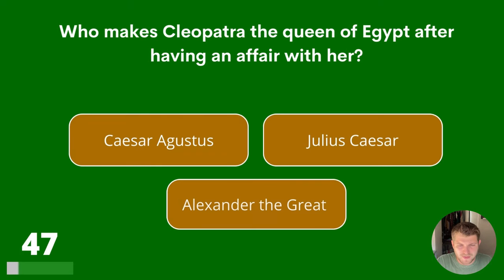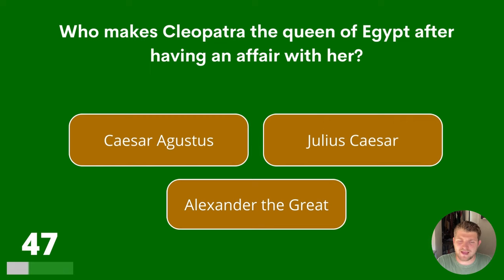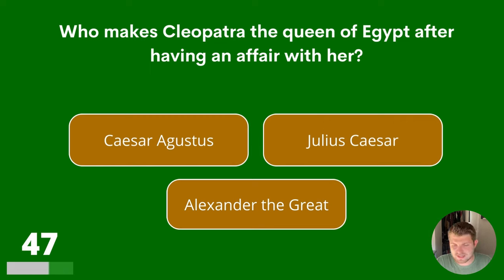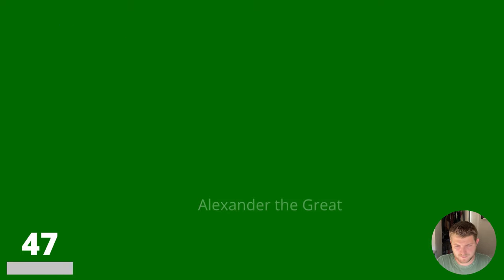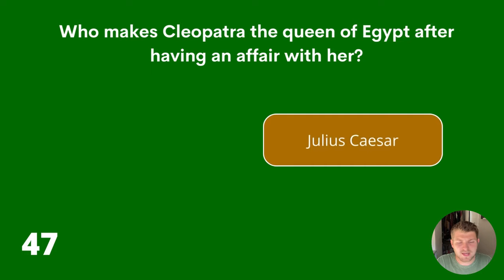Question 47. Who makes Cleopatra the Queen of Egypt after having an affair with her? Caesar Augustus, Julius Caesar or Alexander the Great? The answer is Julius Caesar.